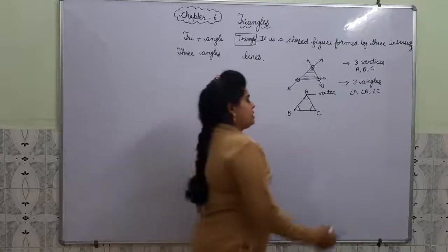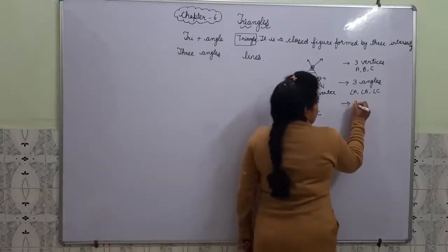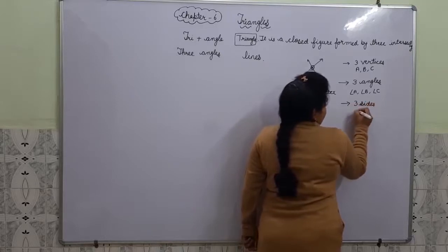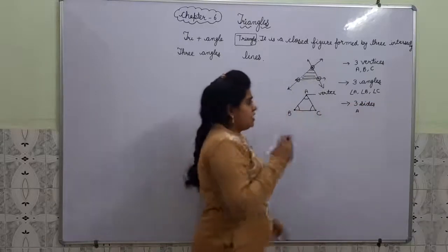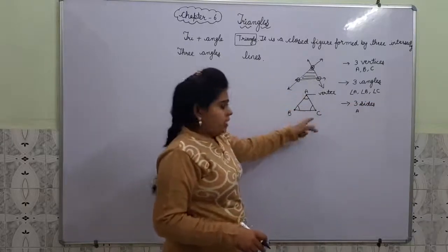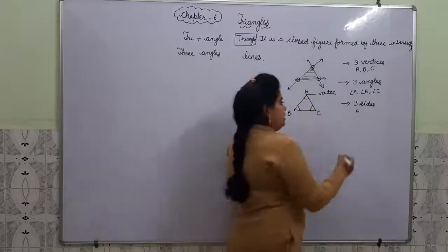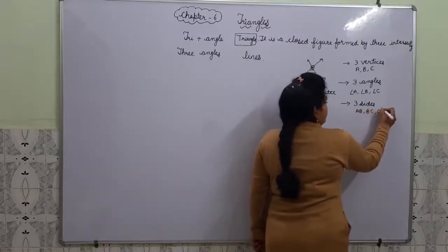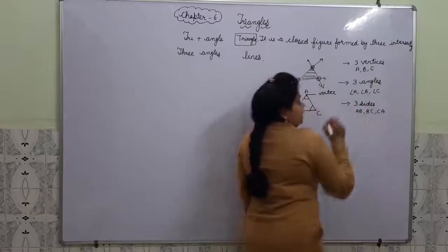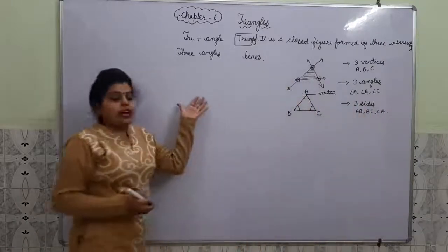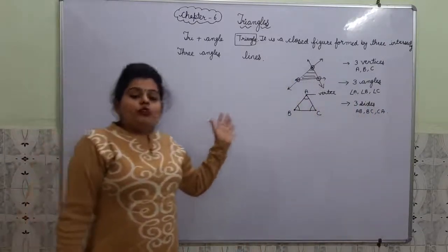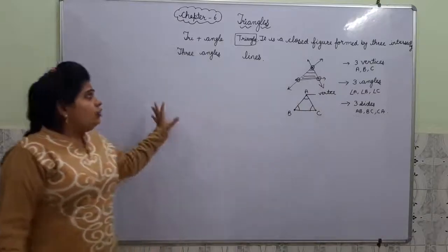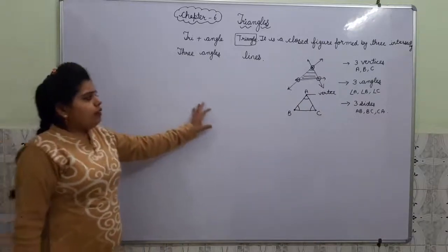And we also get 3 sides: AB, BC, and CA. So a triangle has 3 vertices, 3 angles, and 3 sides.